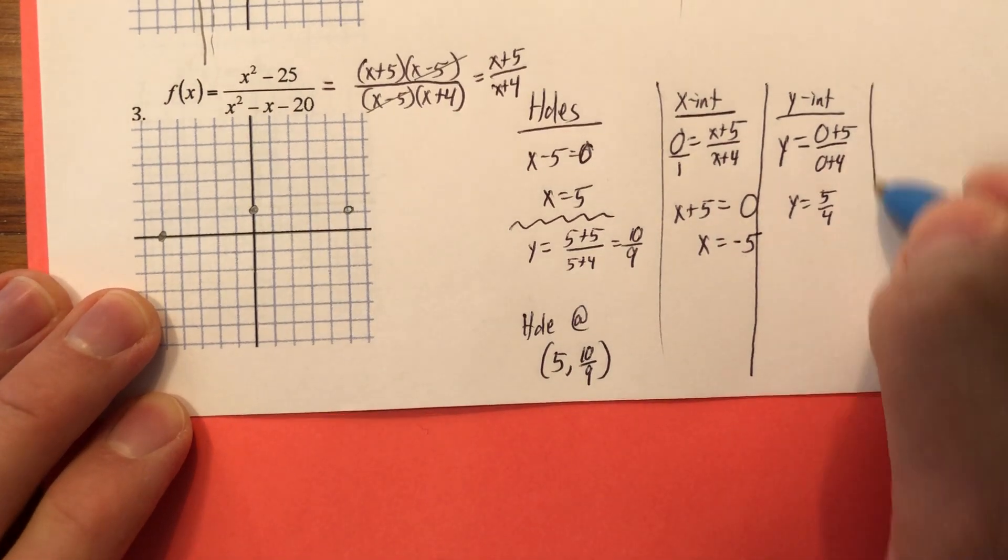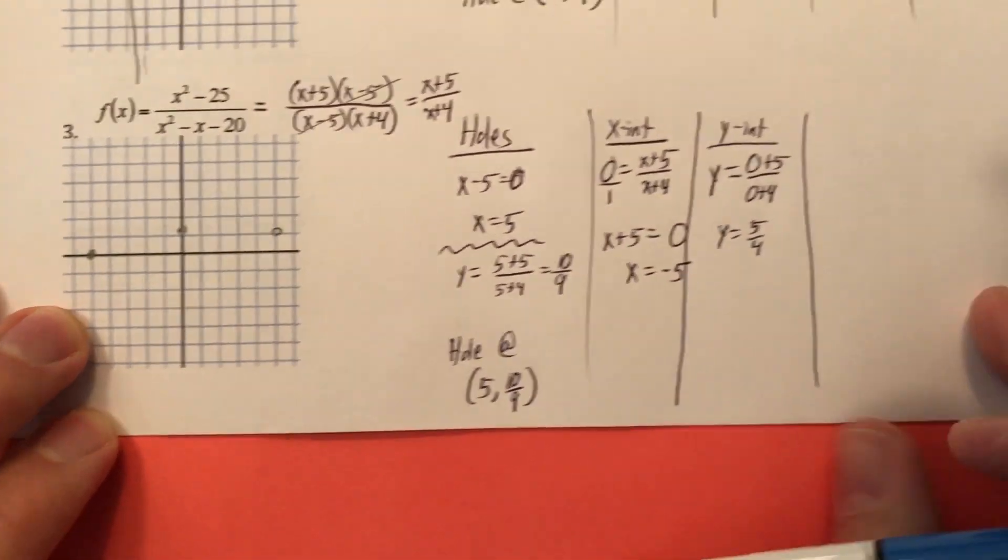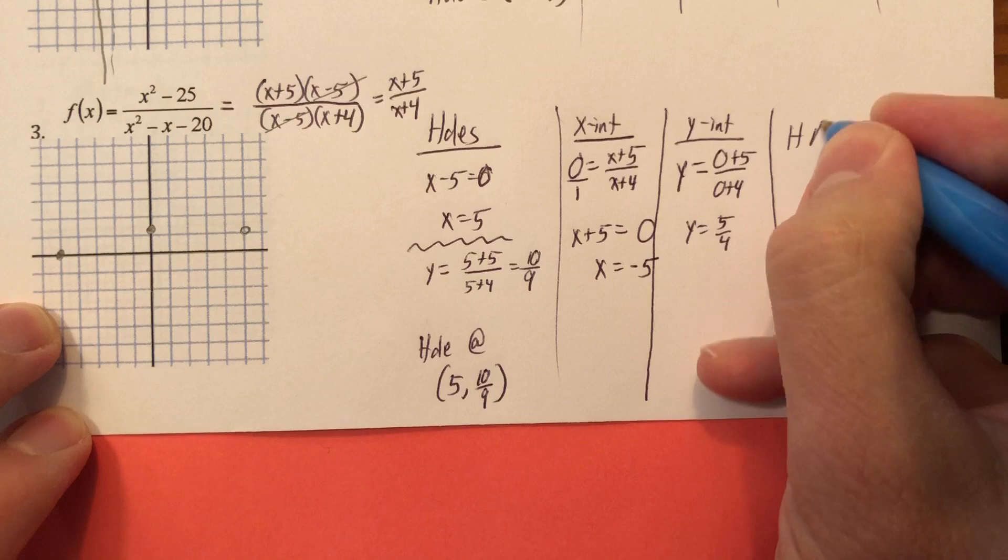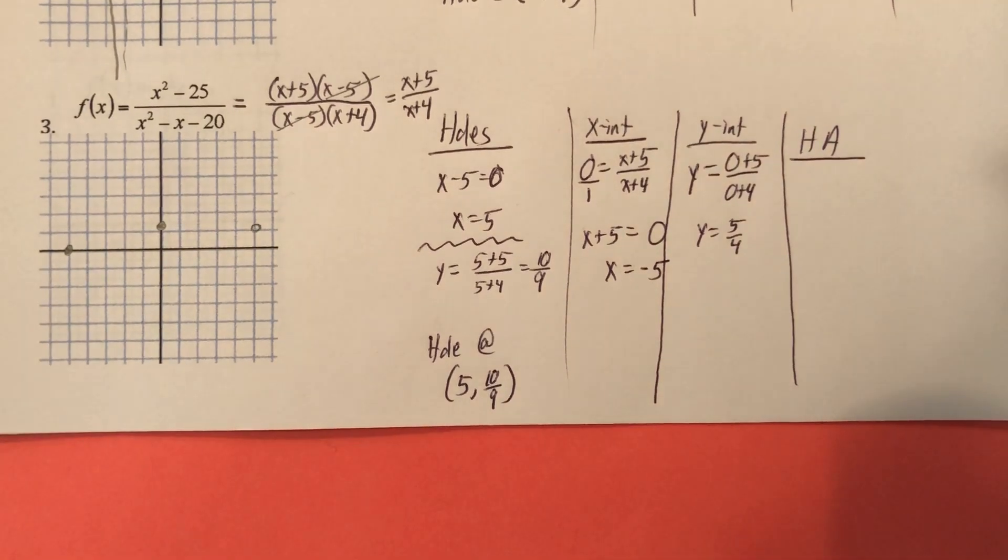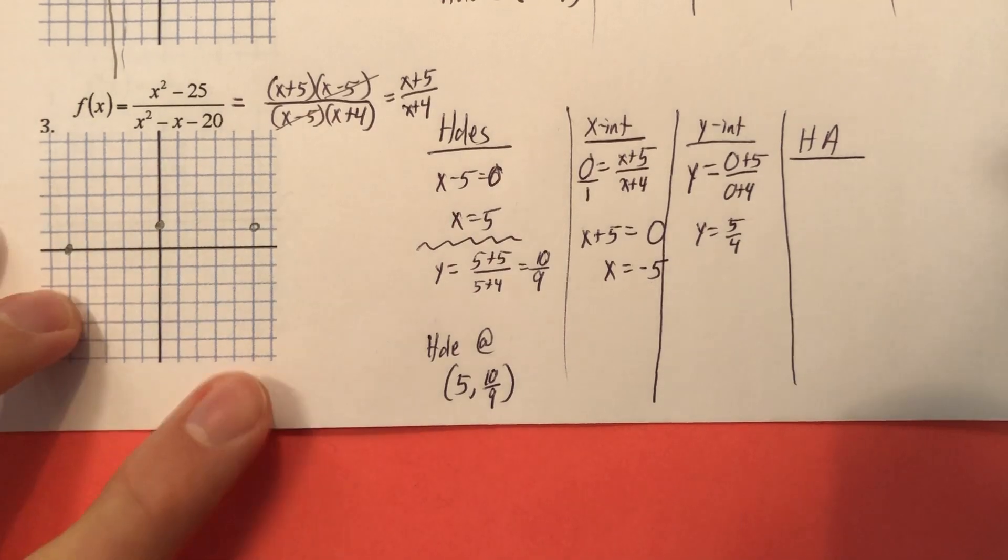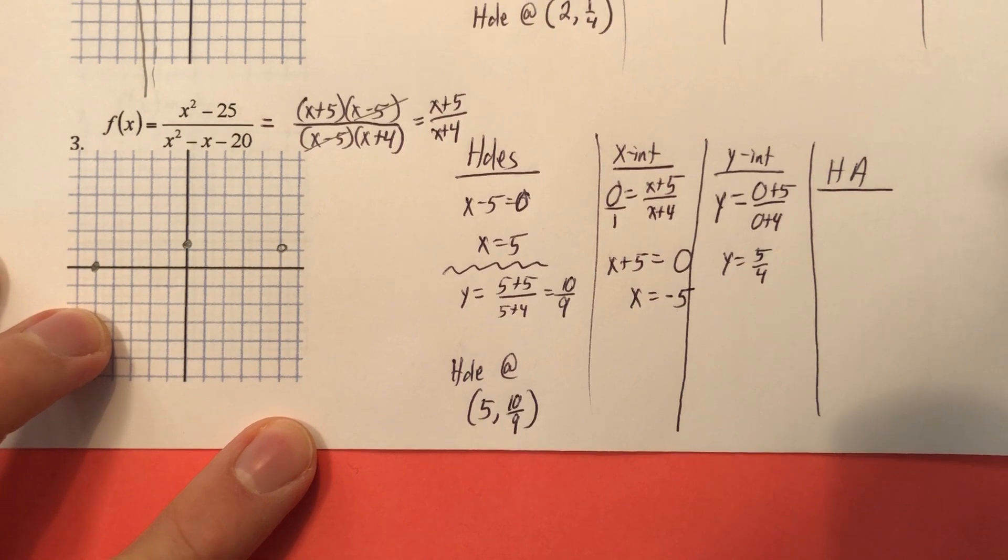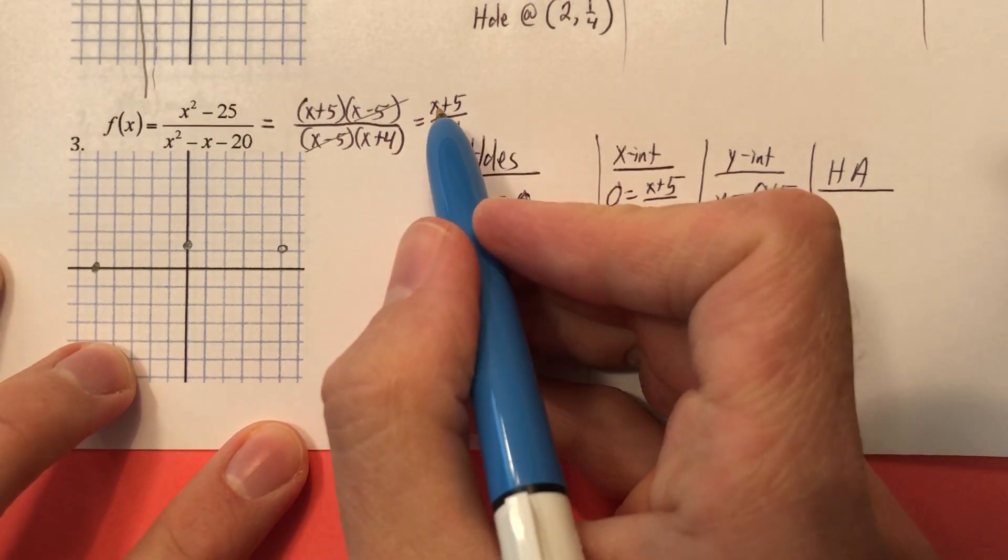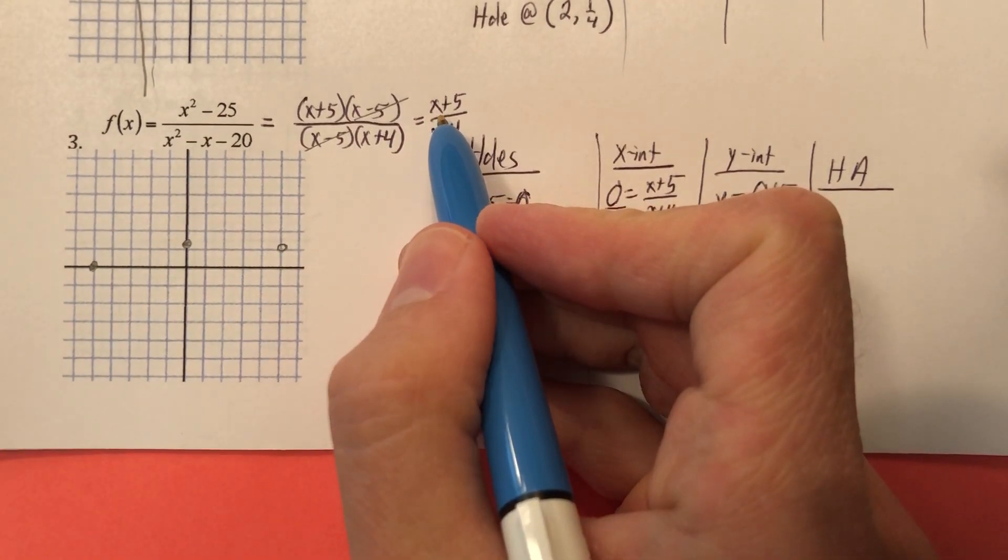And is there a way to find a horizontal asymptote without looking at the graph? Yes, there is. You want somewhat of a shortcut? Here it is. And this is a very rough shortcut that you have to be careful how you use it. But the answer is 1. It's Y equals 1. And here's why.